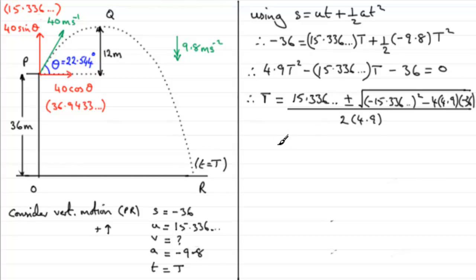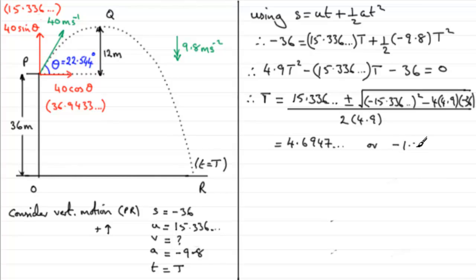Working this out on a calculator gives two values: taking the plus sign gives T = 4.6947, and taking the minus sign gives T = −1.5649. Since time must be positive, we take T = 4.6947 seconds.